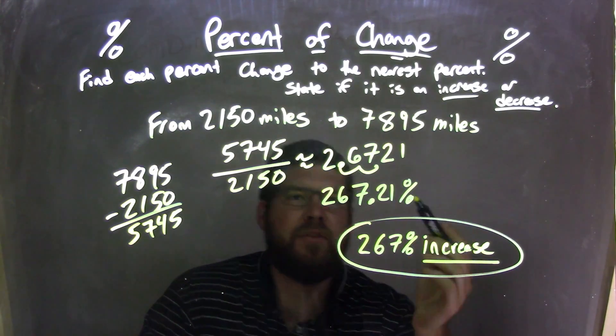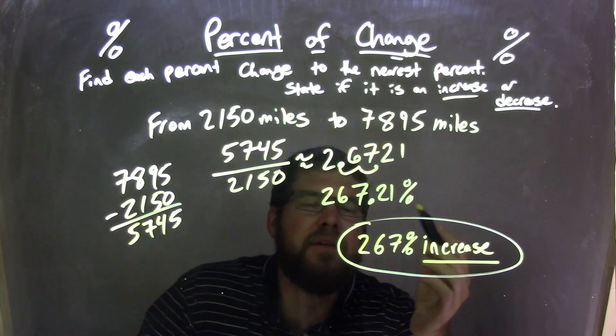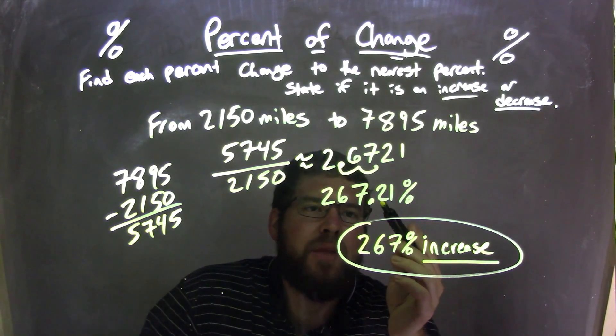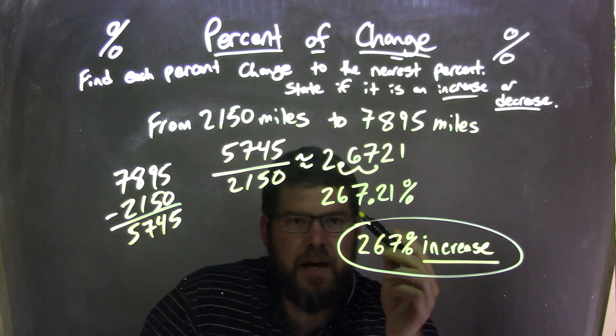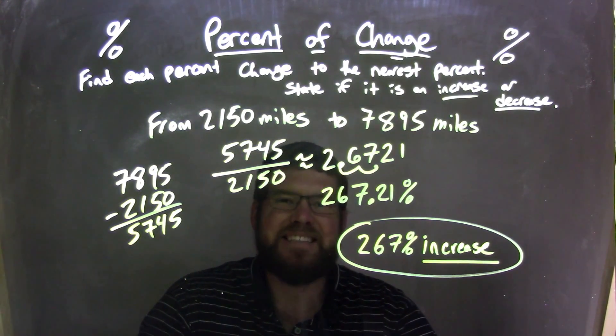That decimal can convert to a percent by moving the decimal two units to the right to get 267.21 percent. And then we have to round that. So we have that 0.2. That 0.2 causes 7 to round down. So we're left with a final answer here of 267 percent increase.